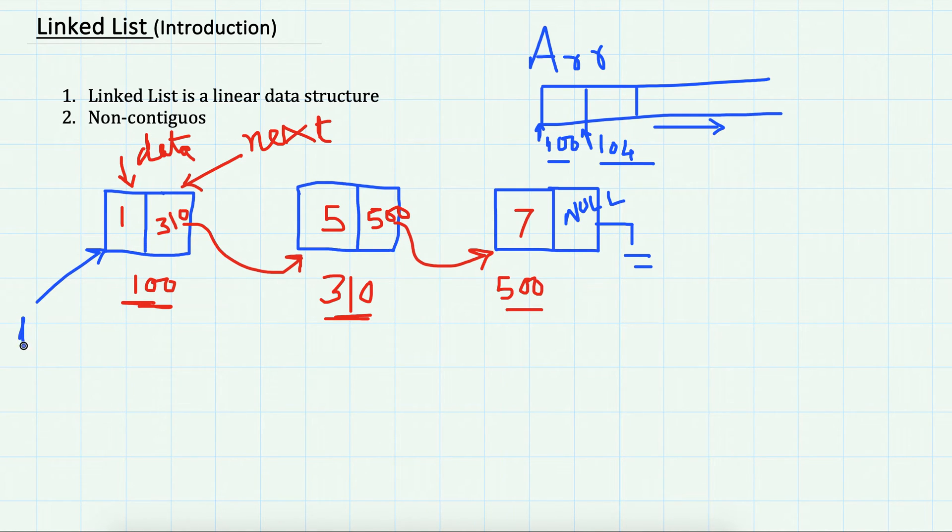the first node, which we usually call the head node of the linked list. In arrays, we can directly go to, suppose, the tenth index and directly access the element there. But in the linked list, we cannot directly go to some index. We have to iterate starting from the head node.